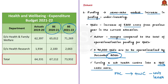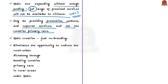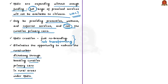Health and wellness centers are expanding but without enough funding. This means the full range of promised services will not be available to citizens — they will only be providing preventive wellness and referral services, not the intended curative primary care. This means transforming sub-health centers or primary health centers into health and wellness centers is not actually an upgradation but just rebranding them. This also eliminated the opportunity to redress the rural-urban dichotomy, since health and wellness centers mainly aim to boost curative primary care in rural areas.